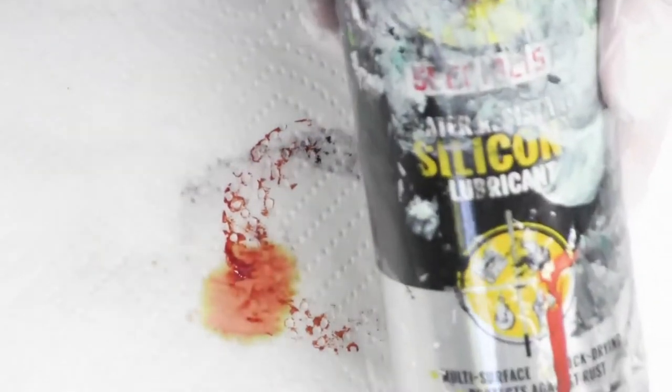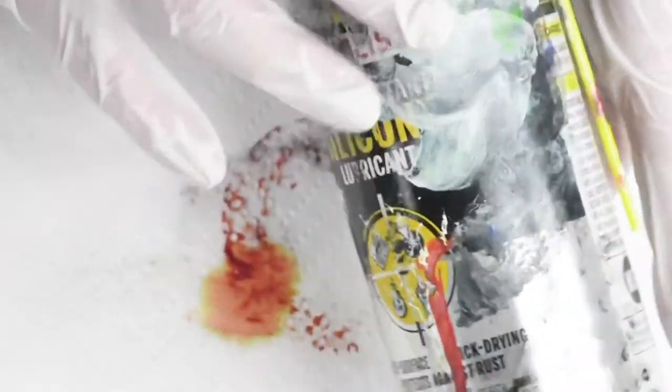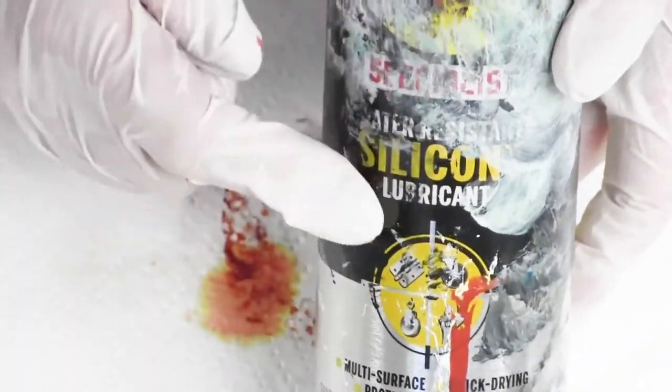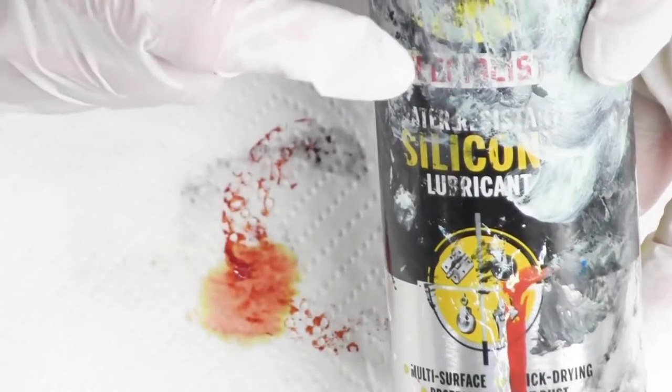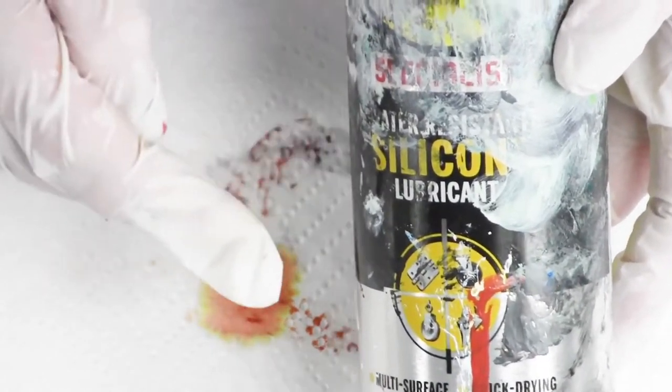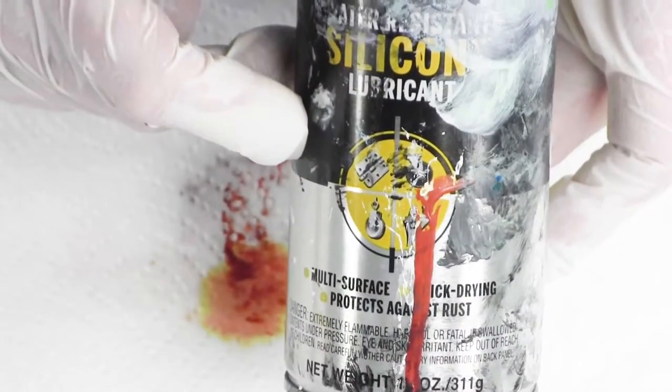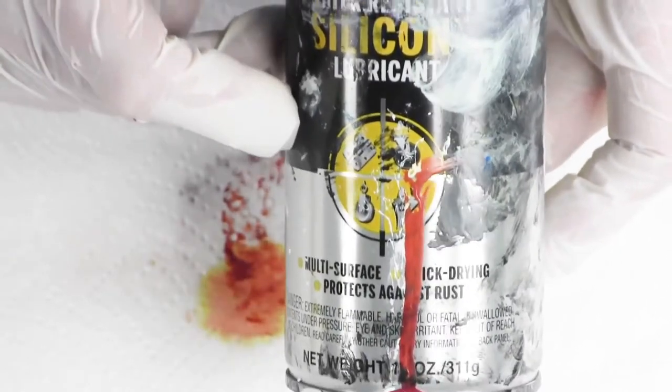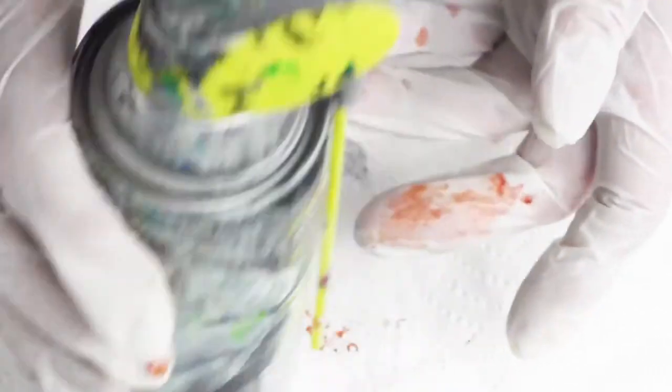I have discovered the first silicone I had great success with was the WD-40. It's a WD-40 that is yellow and silver and it says water specialist, water resistant silicone lubricant, multi-surface, quick dry and protects against rust.